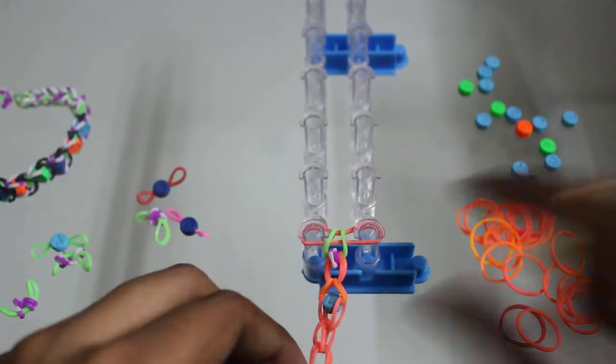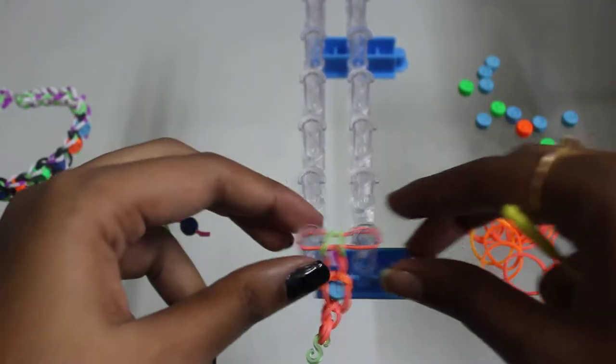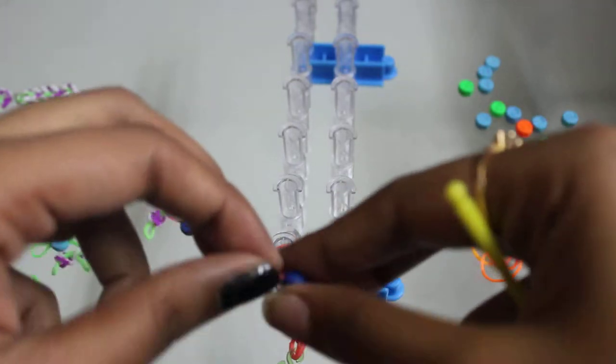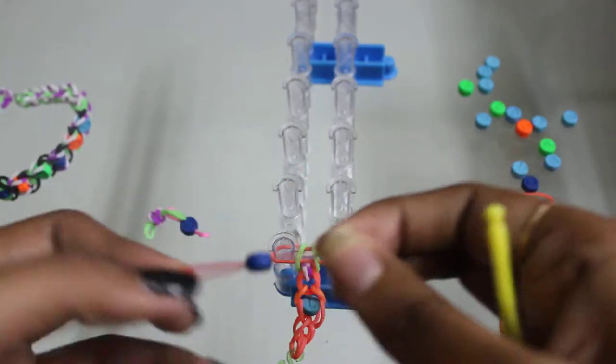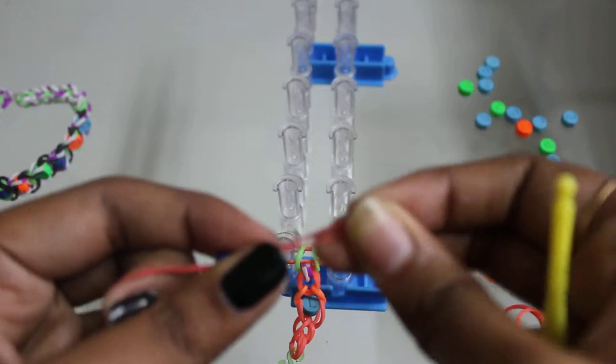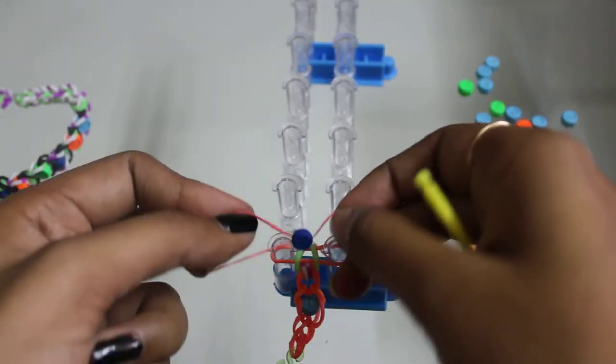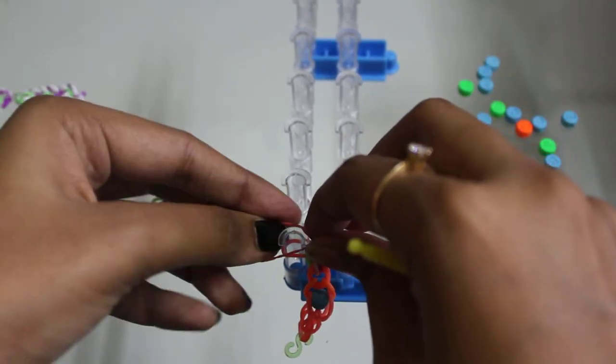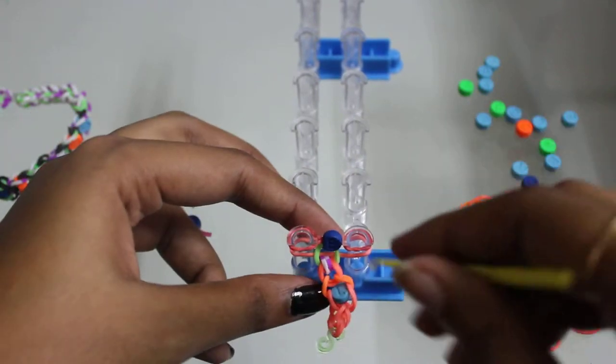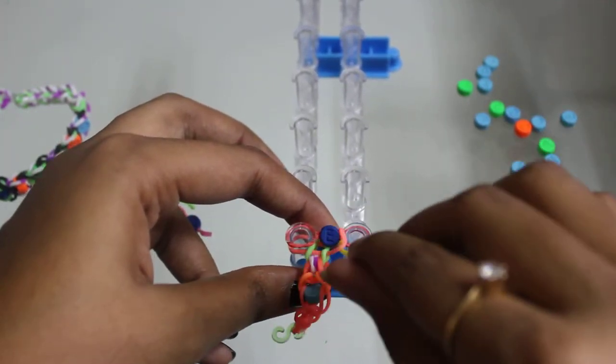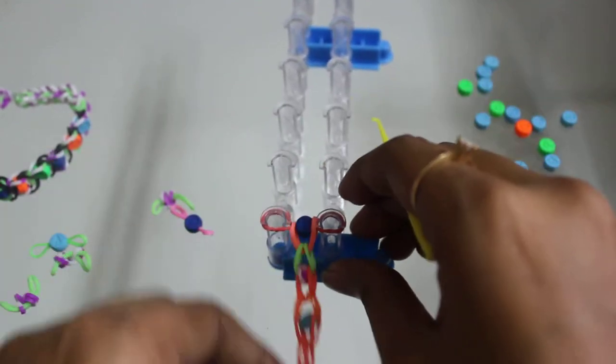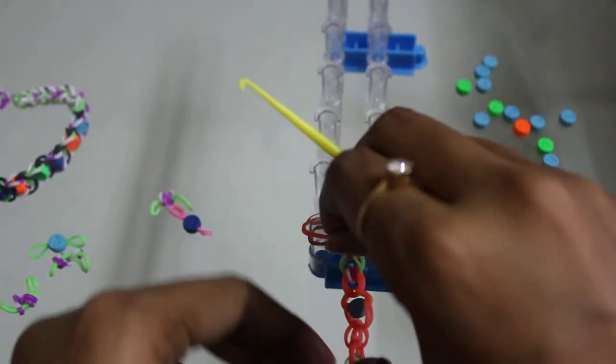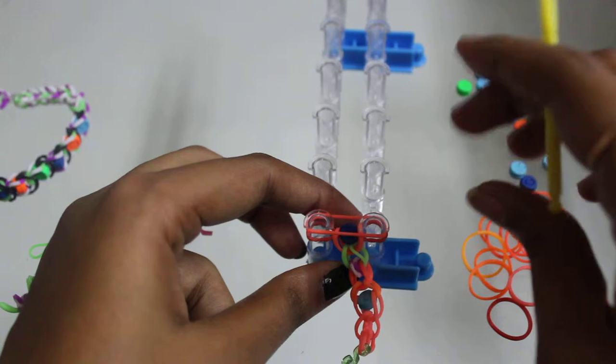Bring it down. Then take your beaded one as usual. I would suggest you stretch it quite a bit and put it on both hooks - it will be easier and won't get removed. Then take the normal rubber band and place it like this.